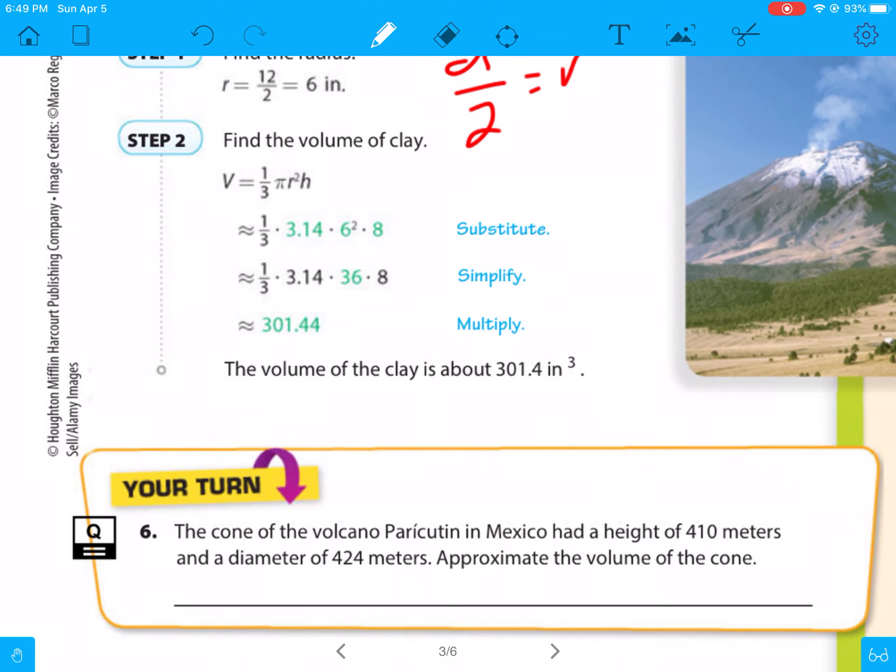So on the Your Turn, just remember, the cone has a height of 410, a diameter of 424, but we can't have the diameter. You have to use the radius. So for that one, radius equals 424 divided by 2, which is 212. So your radius is 212. Your height is 410. And use 3.14 for pi. That's all I have with that one.